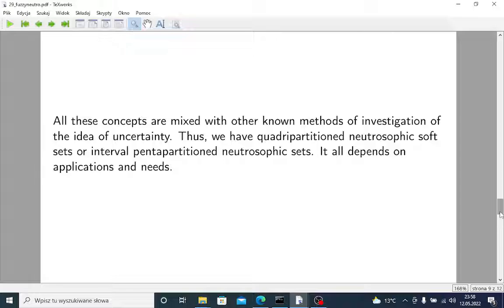And then we may mix it with other known methods of investigation of the whole concept of vagueness or uncertainty. So we have, for example, quadri or penta partitionate neutrosophic soft sets, where the idea of soft sets comes from Molodtsov. And we have interval penta partitionate neutrosophic sets. And it all depends on your applications and needs.